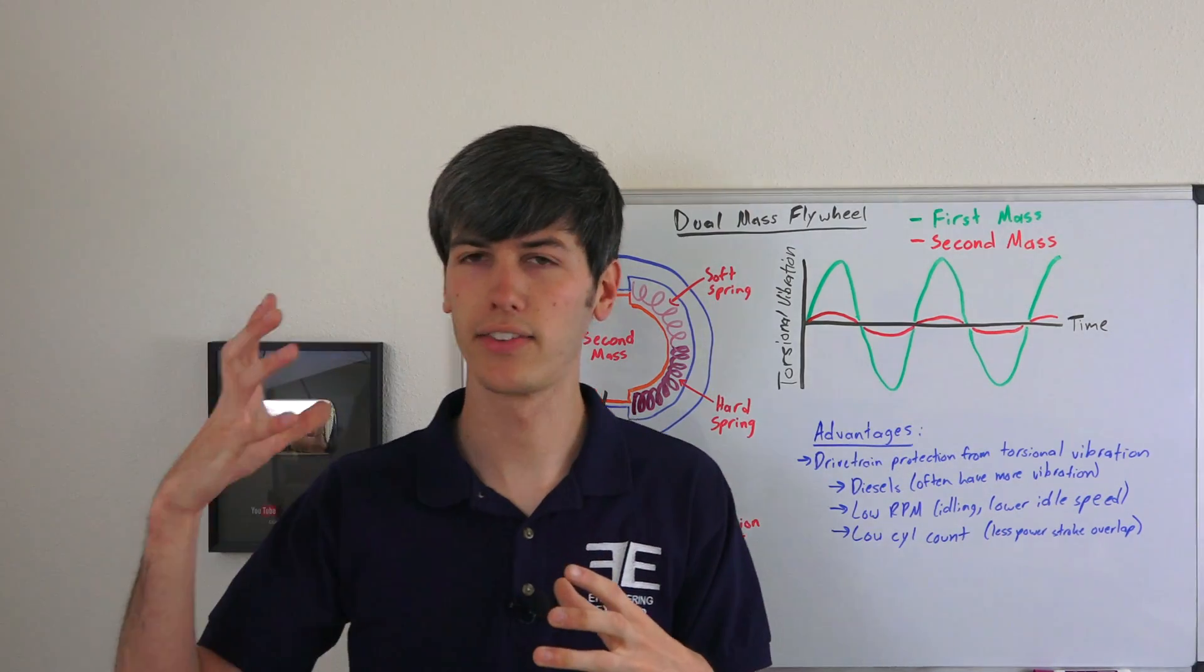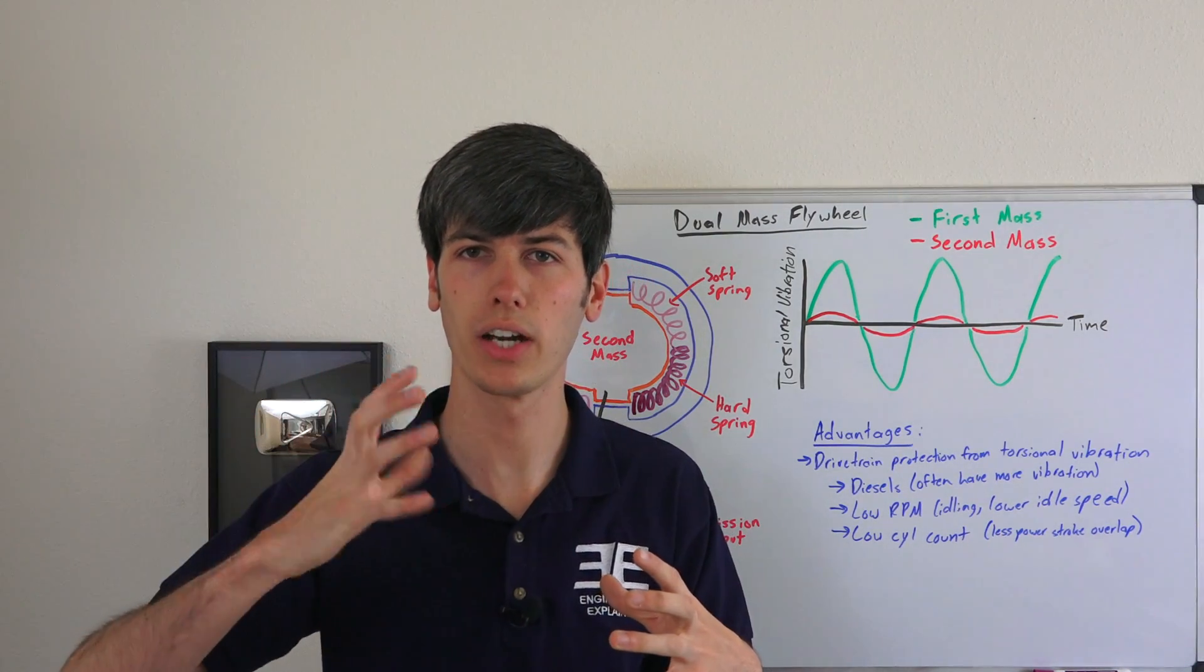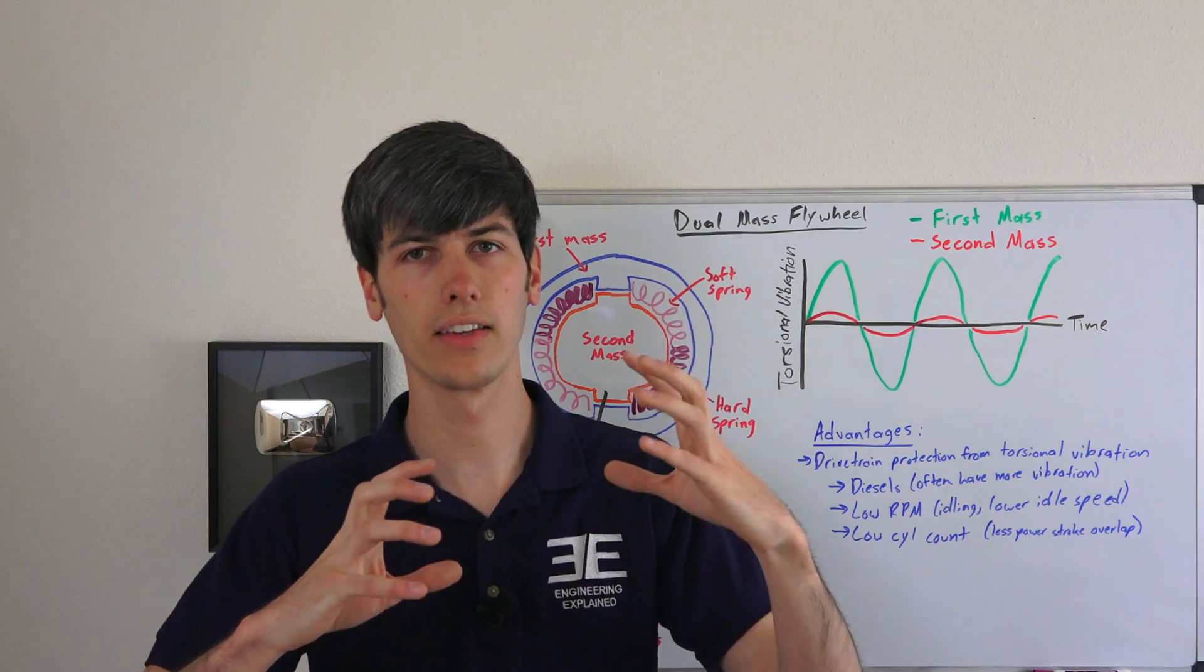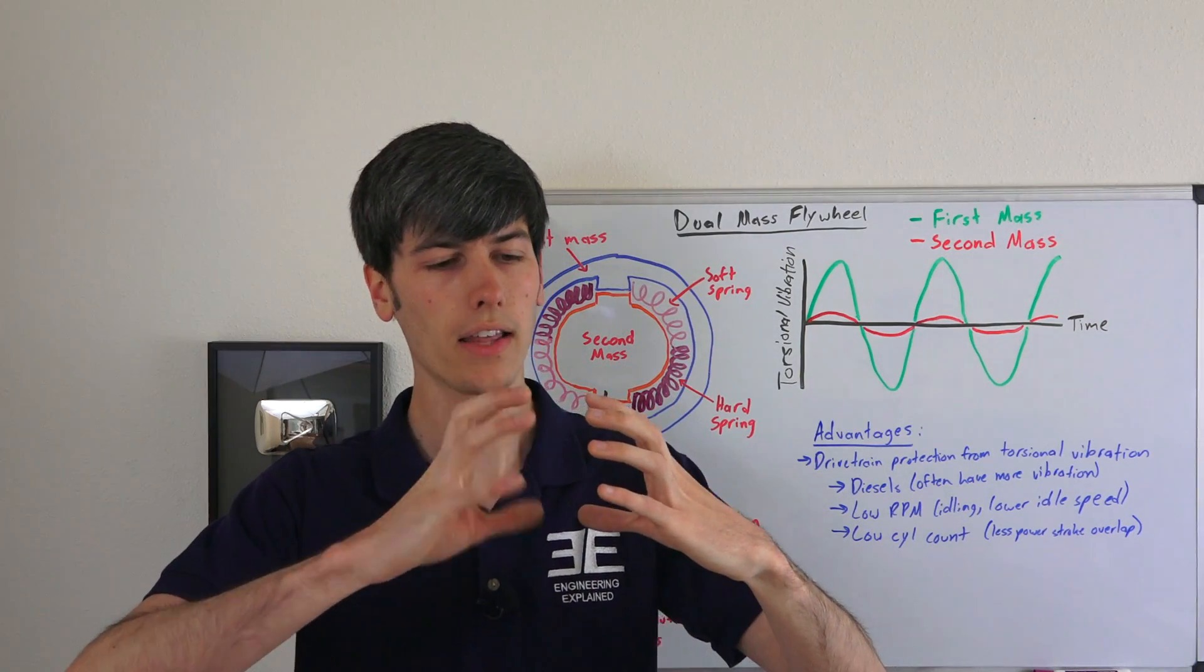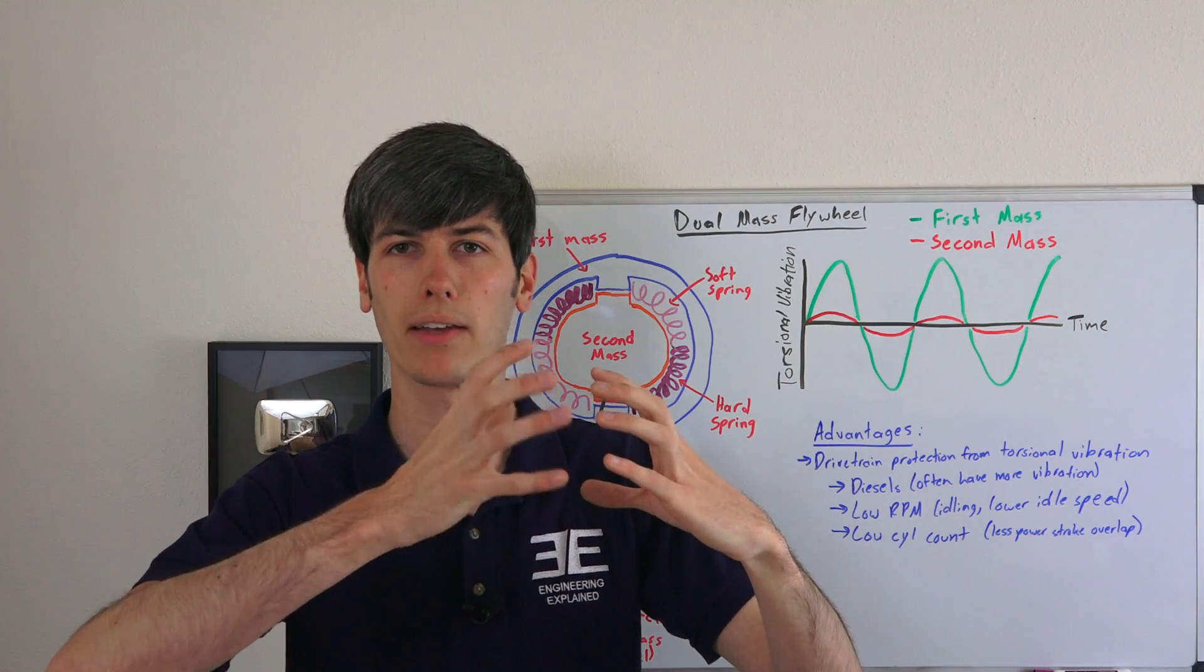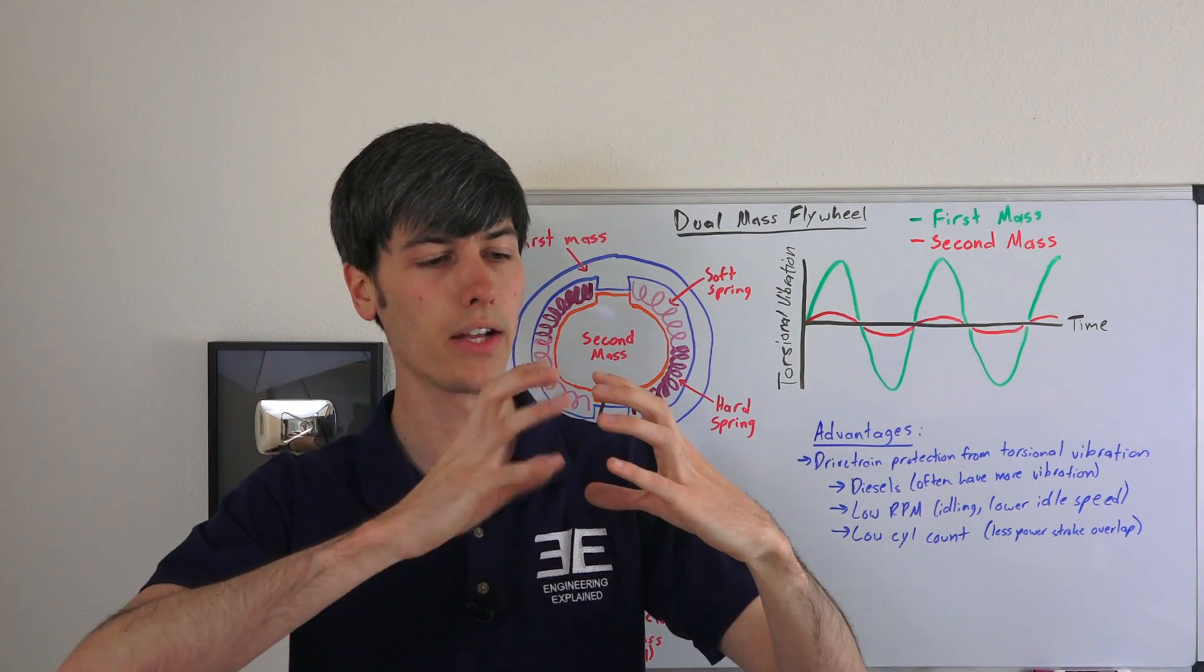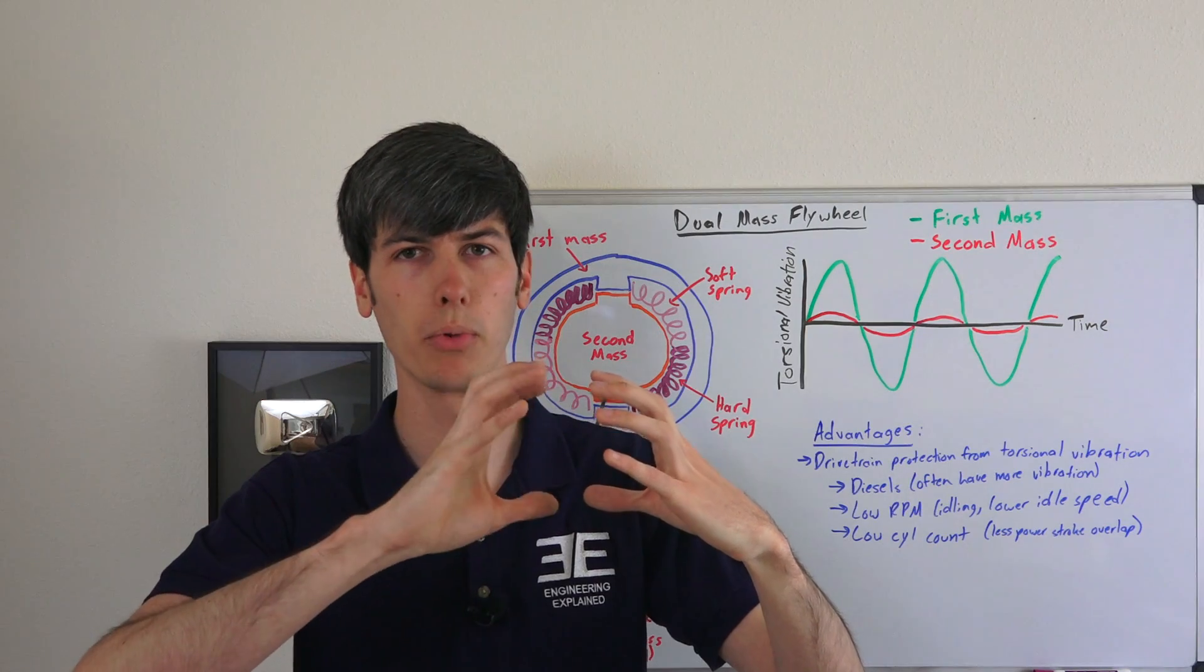If you think of it as this is the output from the engine and it's vibrating like this, and this is the input to the transmission, the output is going to be bouncing back and forth with those springs and then the input to the transmission is going to be much more smooth.